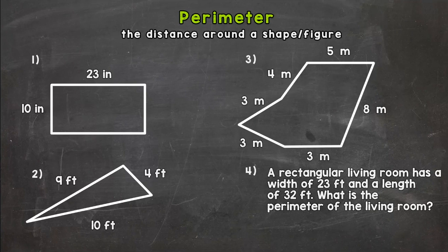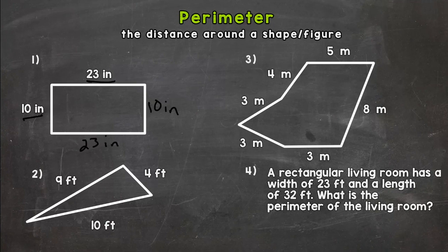So we have four examples here on your screen that we're going to go through. Let's take a look at number one here. We have a rectangle and a rectangle has four sides so we need to add all four sides up to find the perimeter. Now we have a 10 inch here and a 23 inch on the top of the rectangle. So let's fill in the two missing sides. This is the same so we have 10 inches over here and then the bottom which is 23 inches the same as the top.